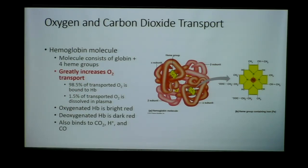When oxygen is bound to that iron, because of differences in how it interacts with light, blood appears bright red — this oxygenated version of hemoglobin appears bright red — whereas when no oxygen is bound, the deoxygenated version appears differently colored.